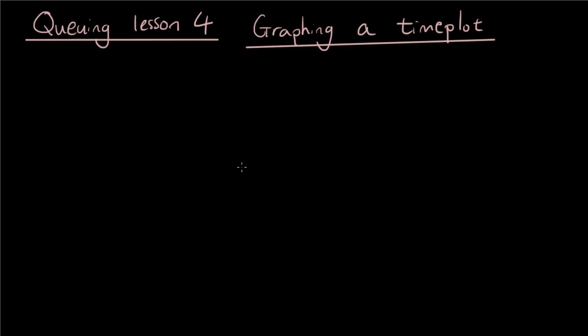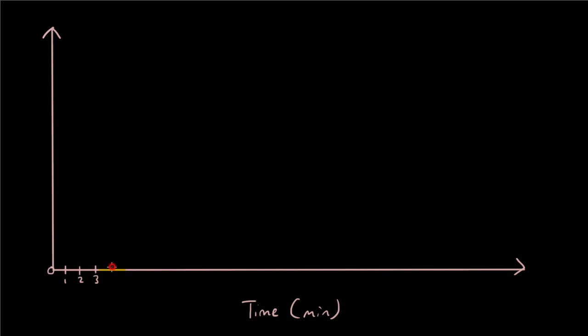This is how you draw a time plot graph. Obviously the first thing you need in any graph is the x and the y axis. The next thing you want to do is on the x axis, put down the time in minutes. We have zero minutes, one, two, three, four, and so on. Hopefully your scale is consistent, so mine's not very consistent, there's some bigger gaps than others, that's not very good in a graph.